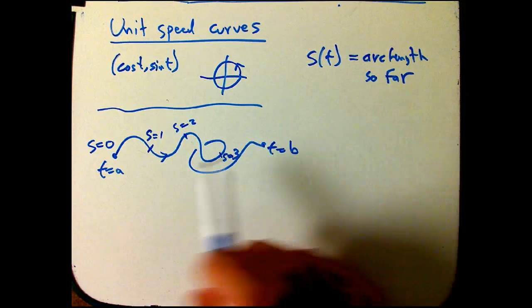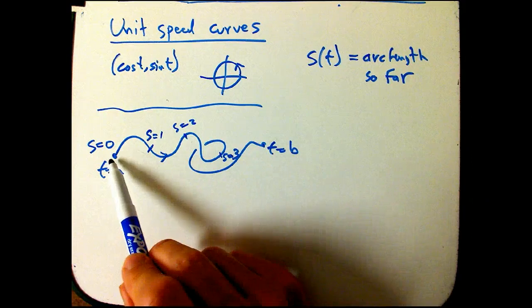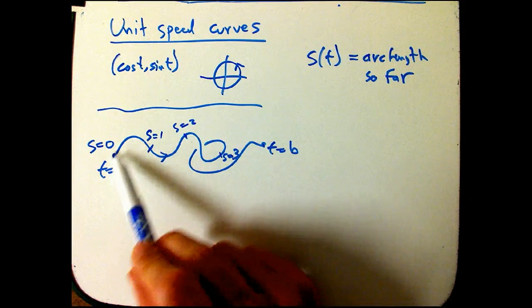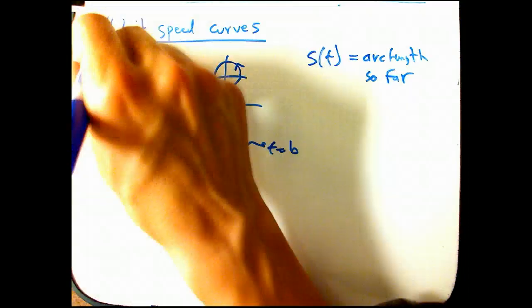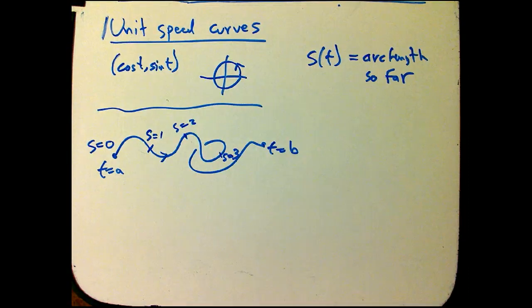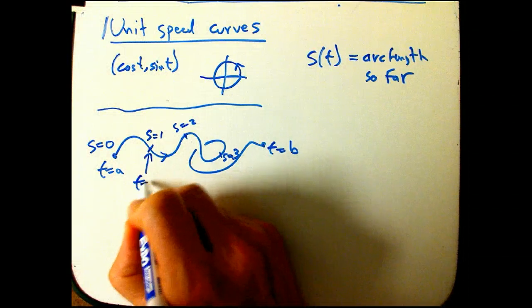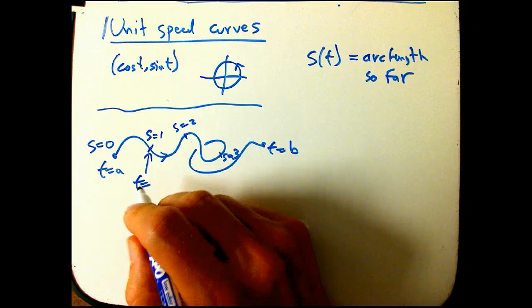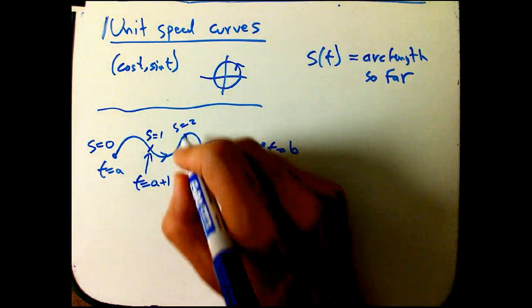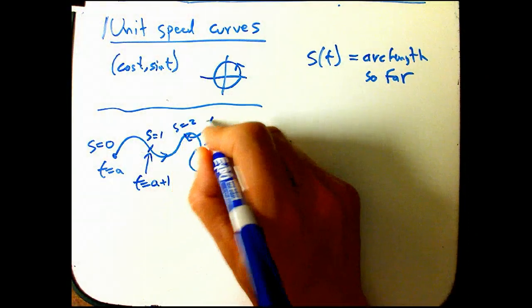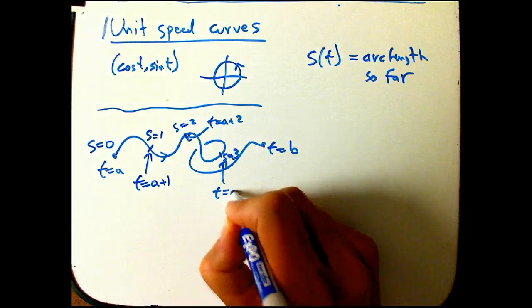Now, in general, the curve could be going faster or slower, so it could be very different amounts of time to get from s equals 0 to s equals 1 versus s equals 1 to s equals 2. But let's assume it's a unit speed curve, and therefore this guy is going to be t equals a plus 1. And this guy is going to be t equals a plus 2, and this guy is going to be t equals a plus 3.